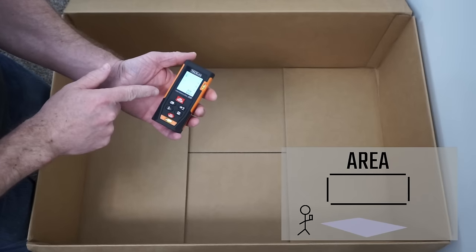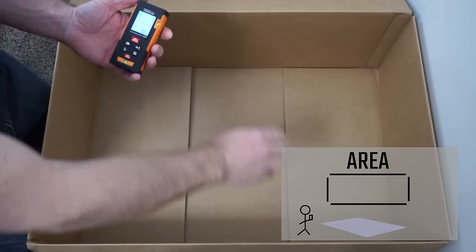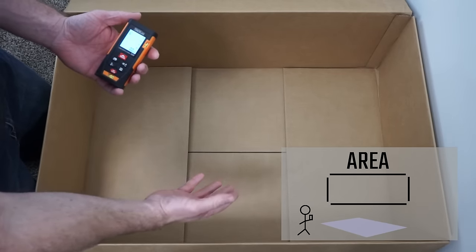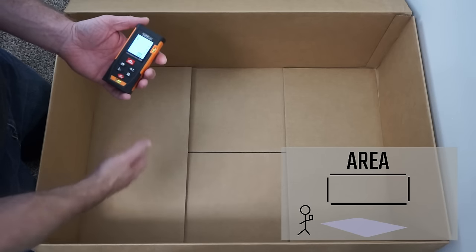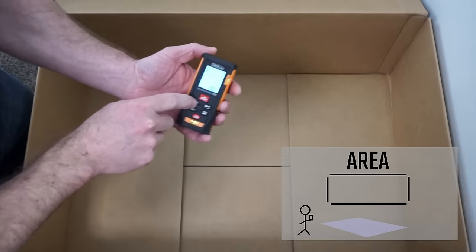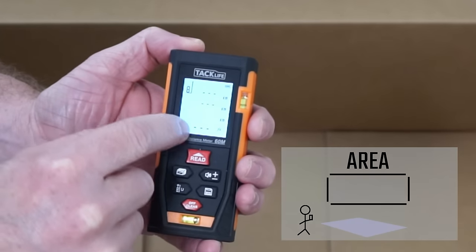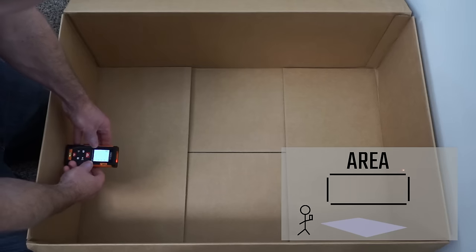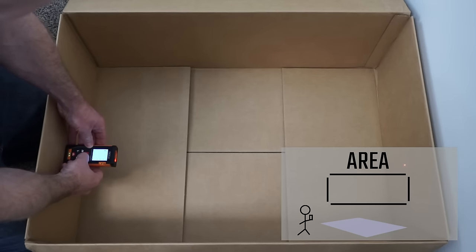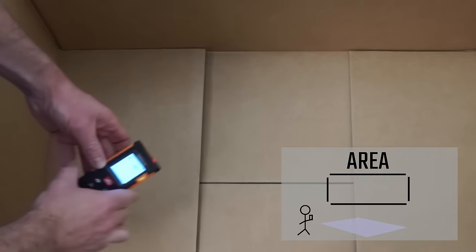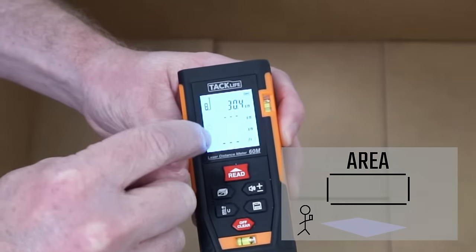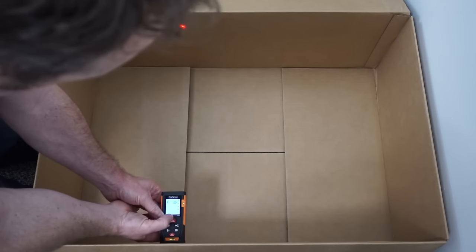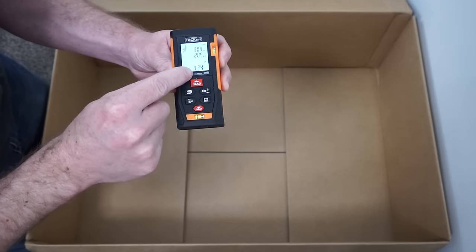Another function that this can do is measure the square footage. So say this was a room and we wanted to carpet it and we needed to know how many square feet were in the room. We could use this. So we just go to the function, the one that looks like a box and it's showing now to measure the length. So we'll put it across here. So this would be from one wall to the other. And then the icon changes to measure the other side. So we'd go ahead and put it here to the wall. And then it calculates everything for you.